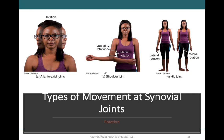Rotational movements refer to movement along the longitudinal axis of our bone. An example is at the humerus — rotating the arm around the humerus is a rotational movement. With our arms at our sides we can medially rotate towards the midline and laterally rotate away from the midline. The humerus remains in the same place but rotates along its longitudinal axis. We can do the same at the hip joint, rotating the femur both medially and laterally.